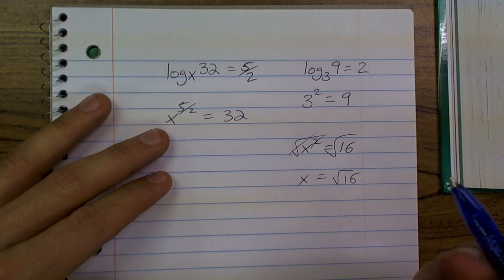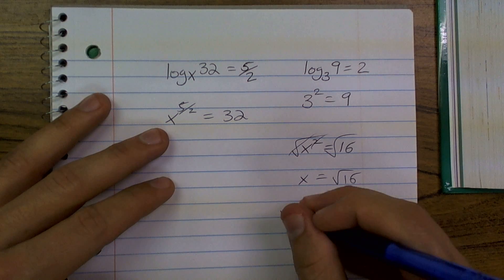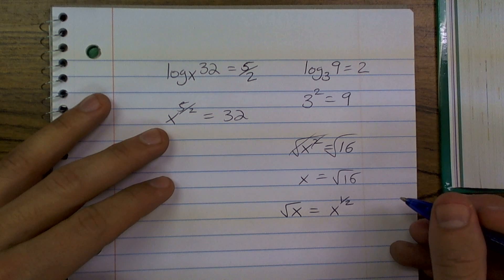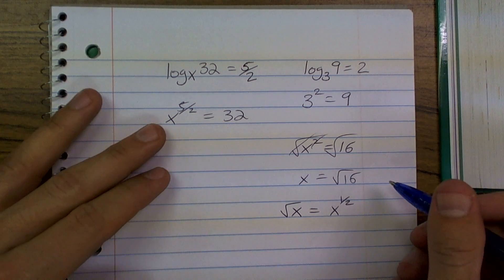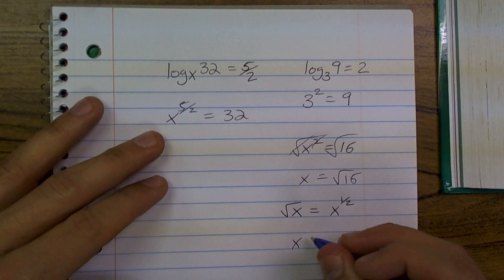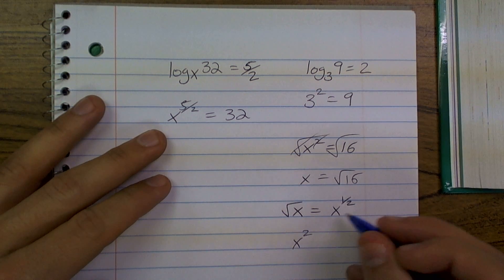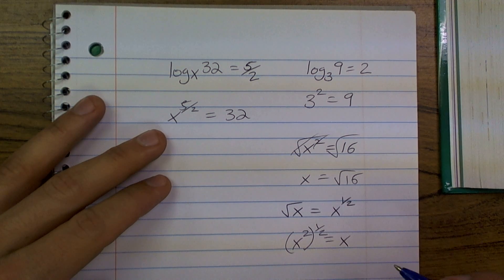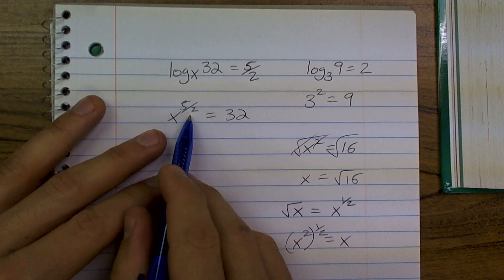Well, what exactly is the square root? The square root of x is the same thing as x to the 1 half power. So, if I had x squared, and what I did was, I raised that to the 1 half power, that would still just leave me x. So, that's something I can do here.